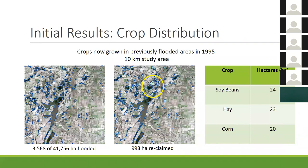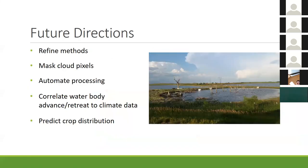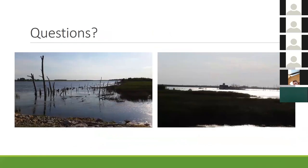Future directions include further refining methods, masking cloud pixels, further automating processing, correlating water body advance and retreat with climate data, and further predicting crop distributions. With that, I'd be happy to take any questions.